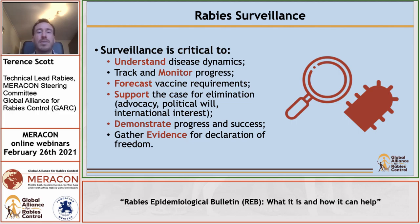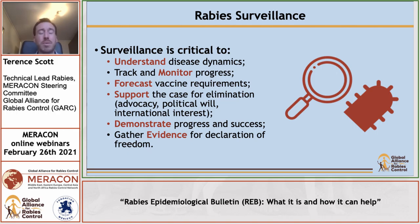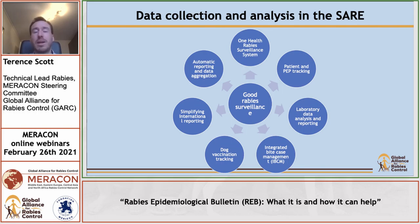Looking at the critical components of a good rabies surveillance system, we see that many different things are needed. It needs to be a One Health rabies surveillance system. We need to track patients and bite victims as well as post-exposure prophylaxis, and look at laboratory data analysis and reporting. Integrated bite case management and active surveillance for the declaration of freedom are important. Tracking dog vaccinations and reporting at national, regional, and international levels are all essential to a good rabies surveillance system.